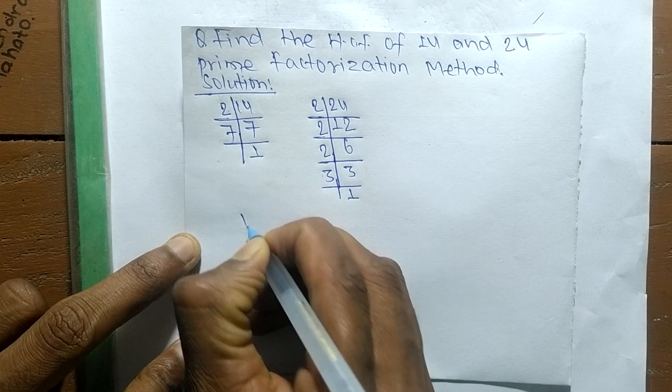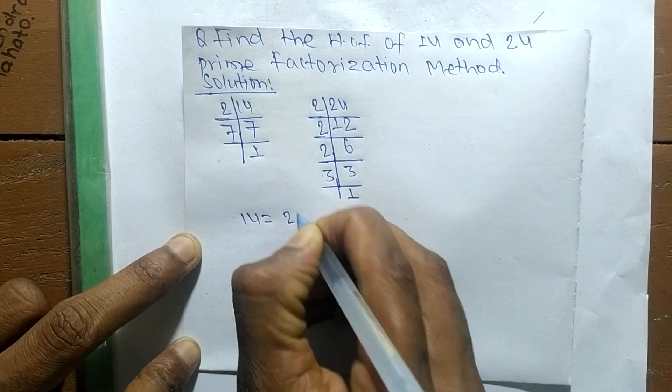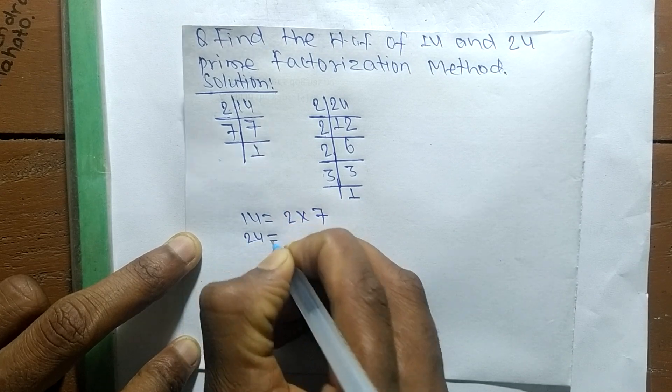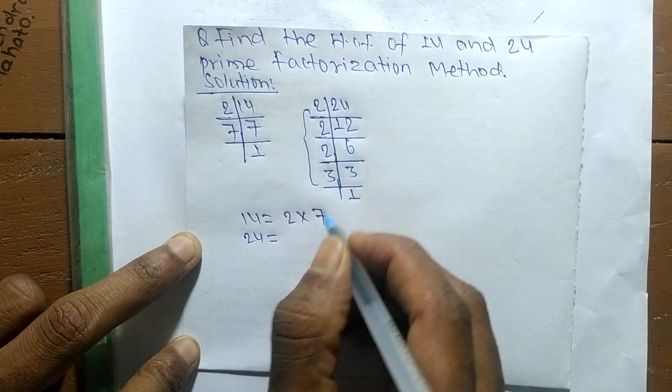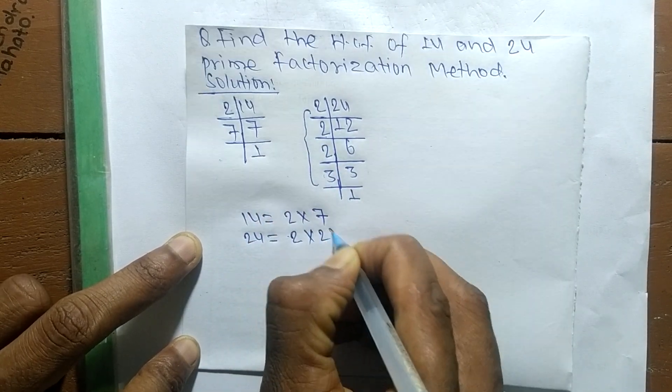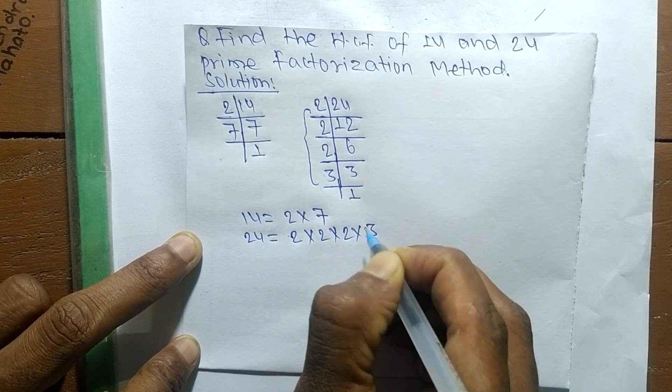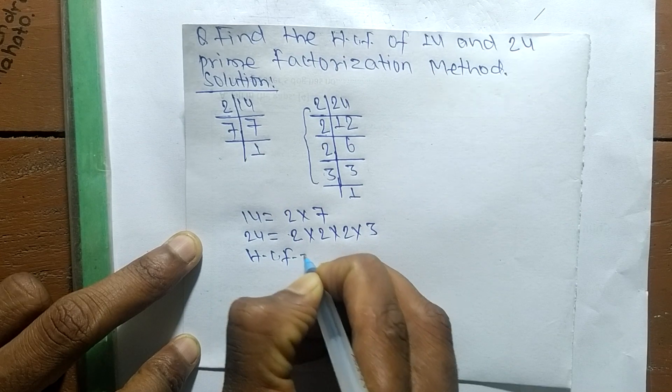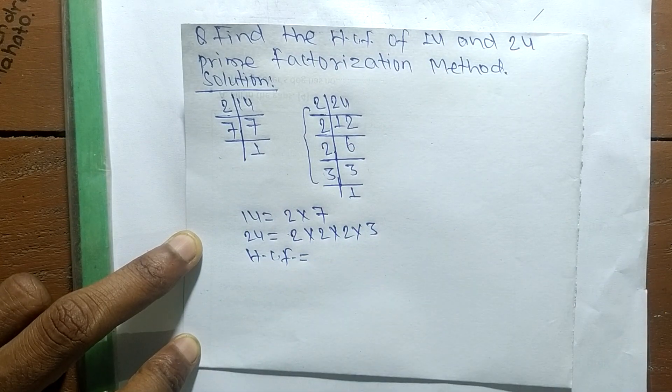So from these prime factors we can write 14 is equal to 2 times 7, and 24 is equal to 2 times 2 times 2 times 3. So its HCF is equal to, now we have to find out the common factors in the prime factors of 14 and 24.